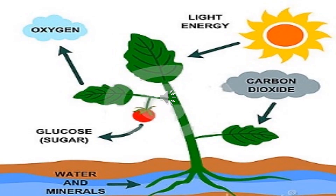Here you can see the process of photosynthesis. The leaves take sunlight from the sun, then carbon dioxide from the air, and water and minerals from the soil. Then leaves give out oxygen, and they store their food in the form of sugar or glucose.